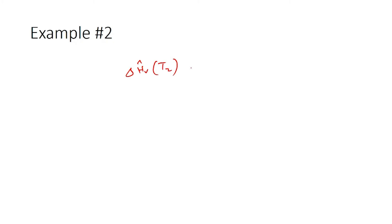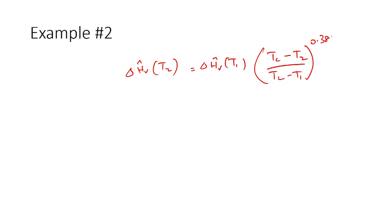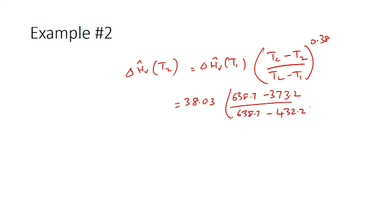The next step is to calculate the heat of vaporization at 100°C using Watson's correlation: ΔHv(T2) = ΔHv(T1) × [(Tc − T2) / (Tc − T1)]^0.38. Using the more accurate Trouton's value of 38.03 kJ/mol: 38.03 × [(638.7 − 373.2) / (638.7 − 432.2)]^0.38 = 41.84 kJ/mol. So the heat of vaporization of N-propyl benzene at 100°C is 41.84 kJ/mol.